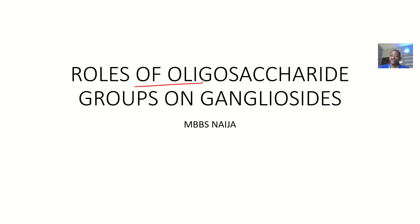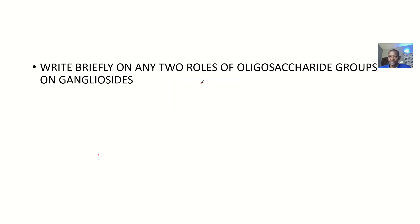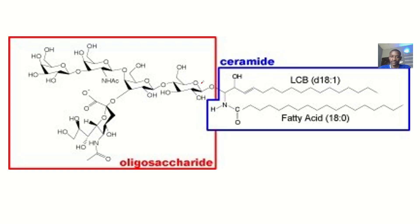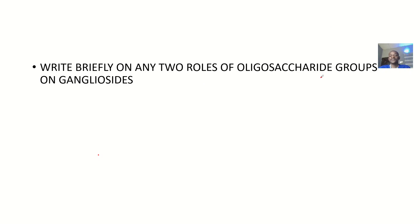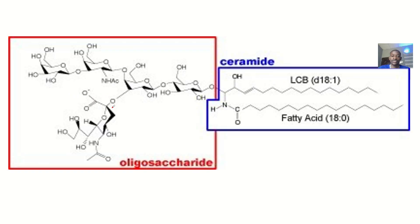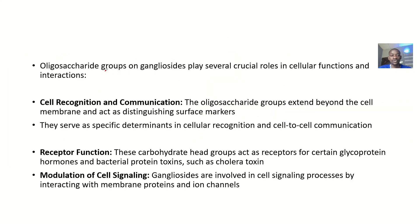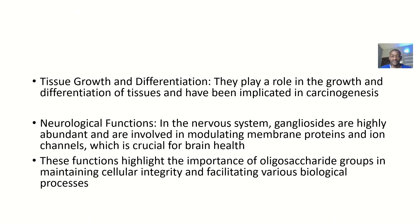Let's quickly look at the roles of oligosaccharide groups on gangliosides. The question asks us to write briefly on any two roles. So it's basically: if you combine oligosaccharides with gangliosides, what would be their function? Oligosaccharide groups on gangliosides actually play crucial roles in cellular function and interaction. We have about five roles, so let's quickly look at them.